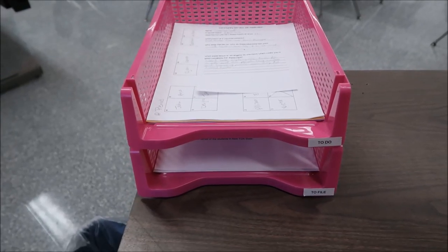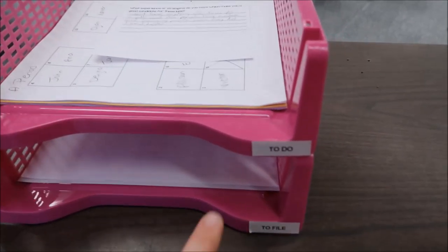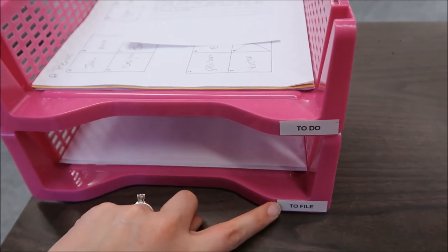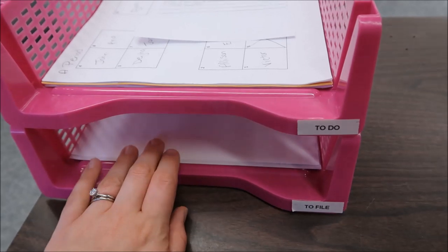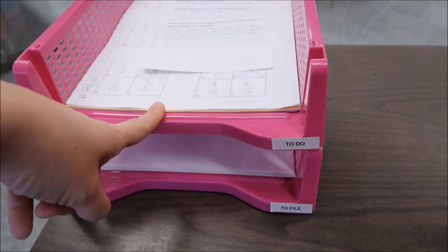To the far left of my desktop, I have these letter trays that I purchased from the Dollar Tree. And I labeled them with my label maker. I have a to-do and a to-file. So anything that I need to file away, I will throw in to this letter tray. Anything that I have to do, I put in the top.